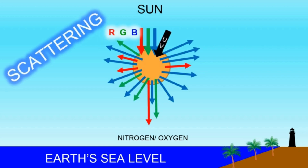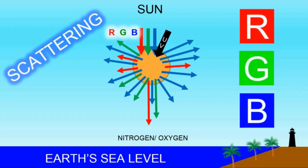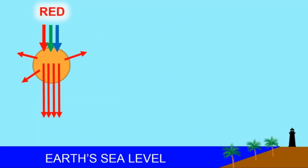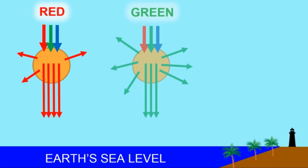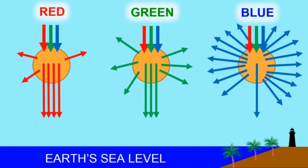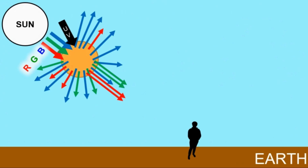How much scattering takes place varies — it's not the same for all colors. If you compare scattering: red scatters the least, and so most of it goes through the molecule. Green scatters a little more than red, but still a lot of it goes straight through. But blue scatters the most, and so a lot less of it goes through the molecule. Instead, it gets scattered sideways.